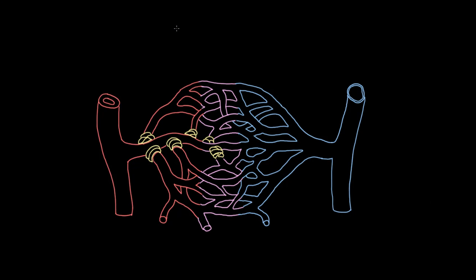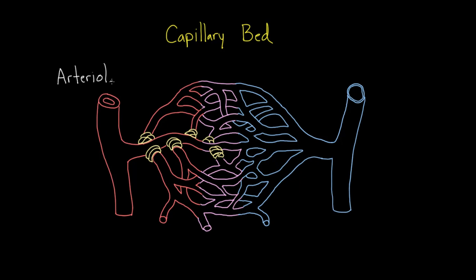We often talk about capillary beds, but let's get really up close and get a good understanding of how these things work, including a couple of neat tricks our body has developed to make sure that blood gets to the areas where it needs to go. Let's start out on the left side — this is an arteriole, which is carrying blood that initially came from the heart.